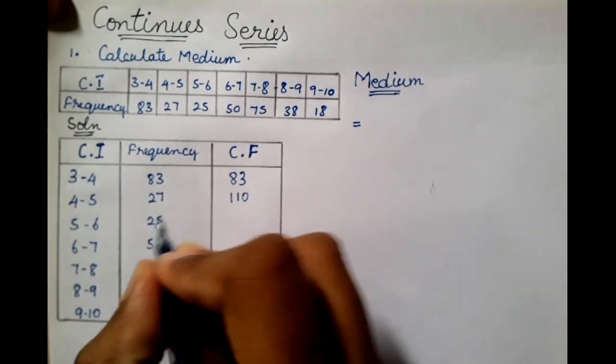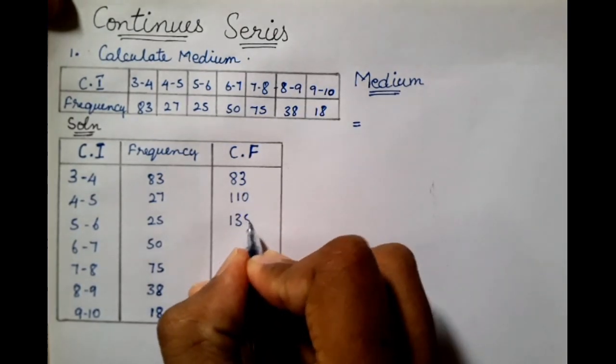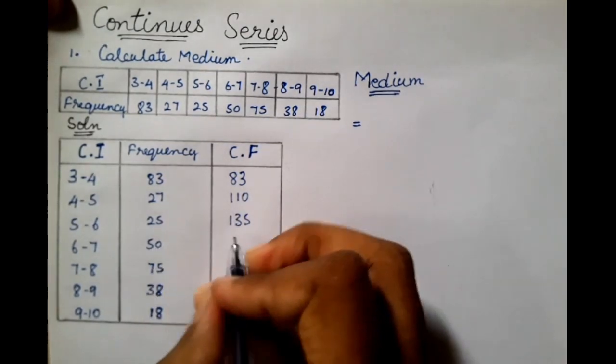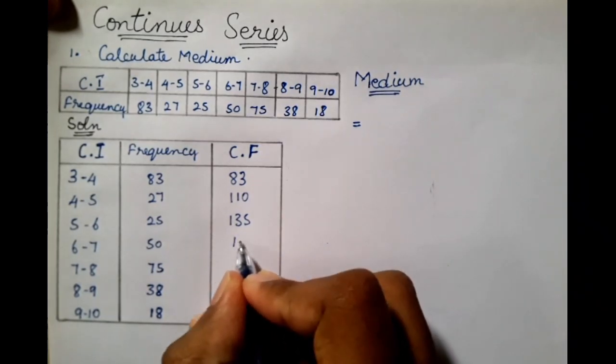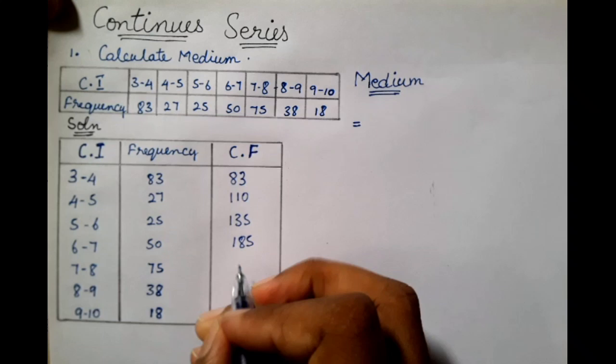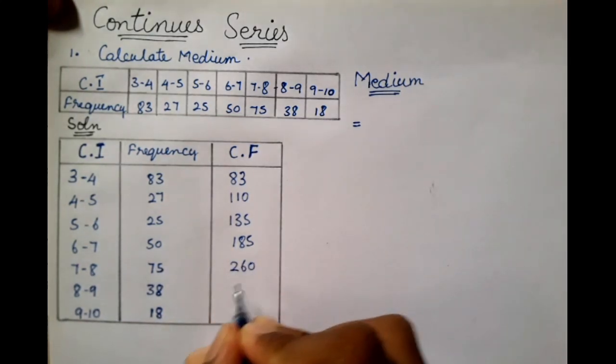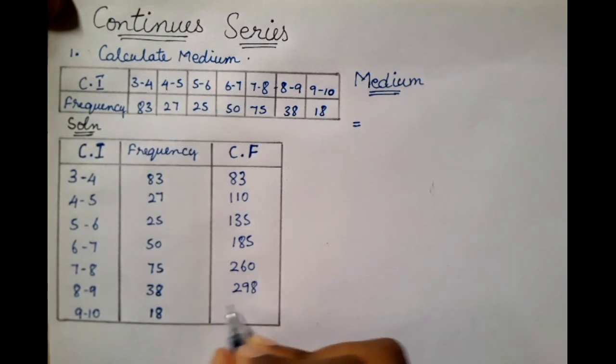If you add 110 plus 25, it is 135. If we add the same thing, we will add across. Now the CF will be made. 185 plus 75 is 260, plus 38 is 298. Last 18 is 316.